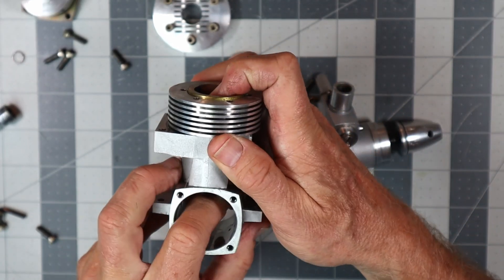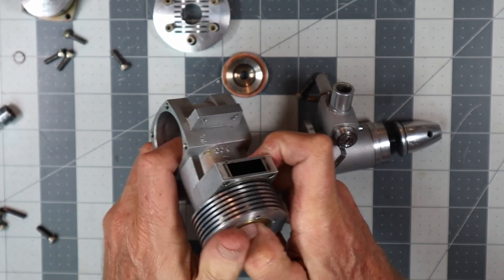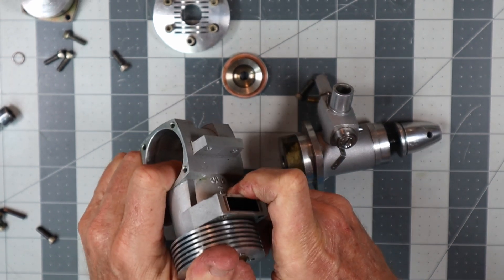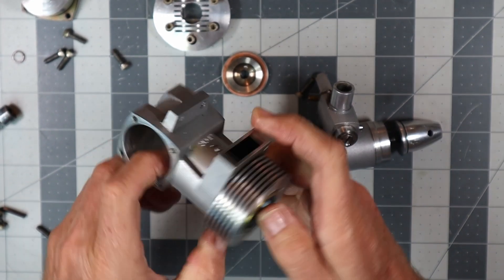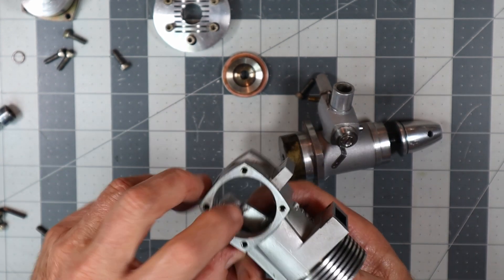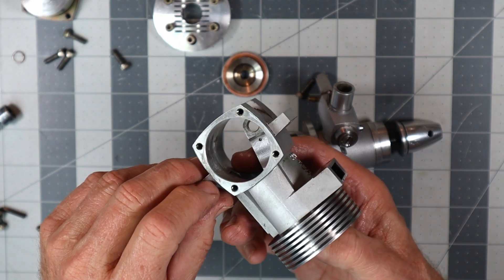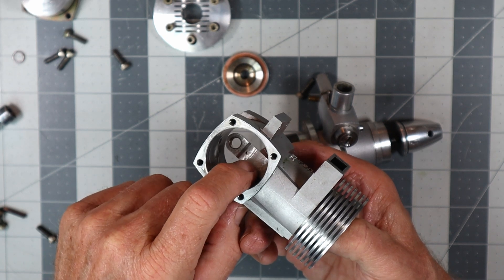But here's our piston. Oil hole, you can see, you should be able to very clearly see the oil hole there for the crank pin.